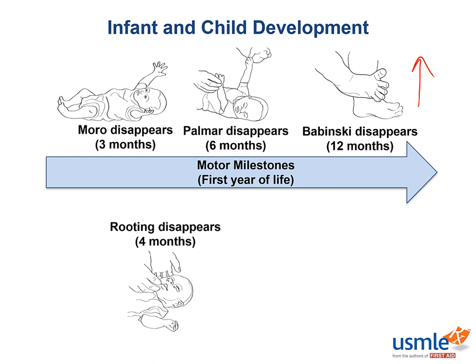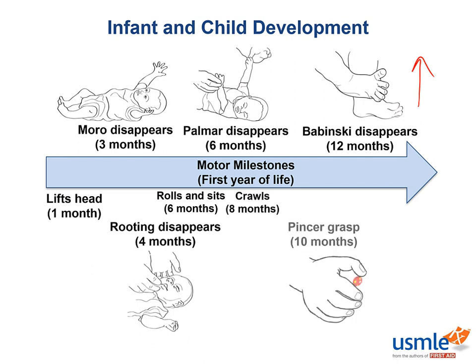Other motor milestones are also starting to appear. At one month, a baby can lift its head in the prone position. At six months, a baby will roll over and sit. And at eight months, the baby will start to crawl. At nine to ten months, the baby develops a pincer grasp. One way to remember this is that if you pinch your index finger and thumb together and point the rest of the fingers down, it looks like the number nine.